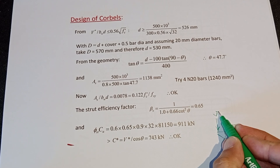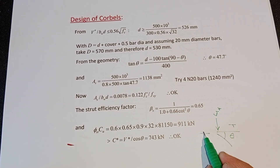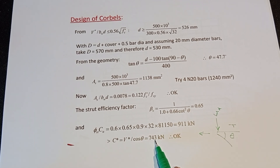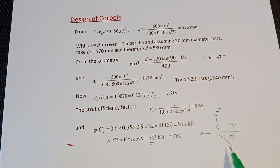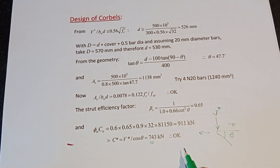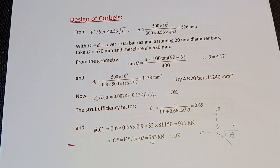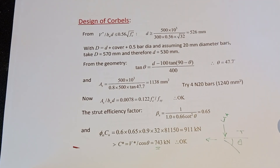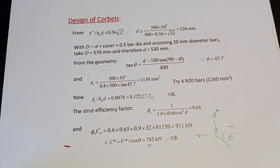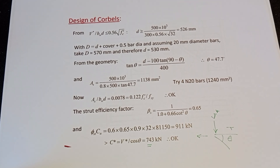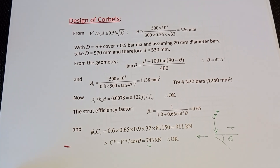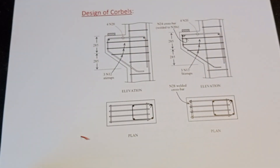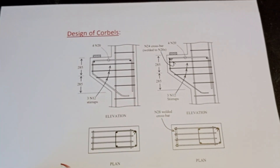The reduced compression capacity of the concrete strut is 911 kN. From the strut-and-tie geometry, the applied strut force C* = V* / cos(θ) = 473 kN. Since the applied load of 473 kN is less than the capacity of 911 kN, the concrete alone is adequate in the strut zone — no additional compression reinforcement is required. However, minimum reinforcement must always be provided for shrinkage control and visibility in the corbel.